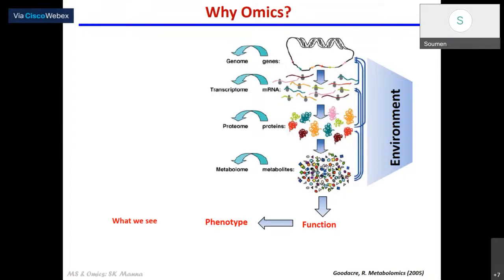Therefore, particularly if we miss the ones towards the bottom of the information cascade — which is proximal to the phenotype — we are certainly going to miss how to correlate the genotype and the environment with the phenotype. This is where the whole idea of looking at biology in totality, in a holistic perspective, comes in — you need to look into all different kinds of information flow and interactions. Therefore, you need to look into all kinds of molecules and their behaviour. And that is the genesis of omics.